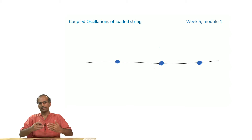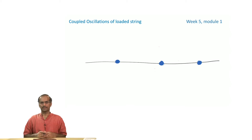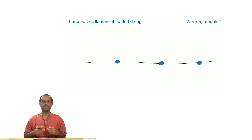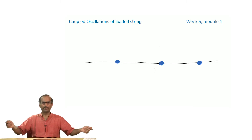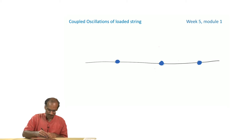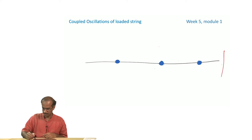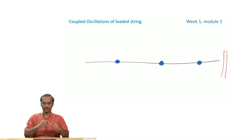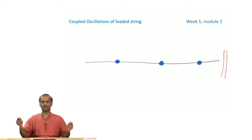Now we want to take that idea of coupled oscillations further. We want to go to a limit where a large number of particles are coupled together and in the appropriate limit they would maybe form a string, for example. The starting point for that would be something like what I have drawn here.